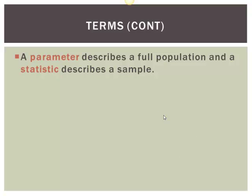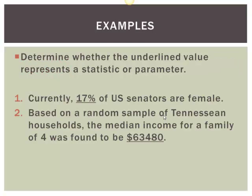A parameter describes the full population, and a statistic describes the sample. Here's an example: 17% of US senators are female — is that a statistic or a parameter? Think statistic-sample, the two S's, or parameter-population, the two P's. Well, it's a parameter, right? It covers all US senators, and there are only 100 of them. So when there are so few, we're often looking at parameters.